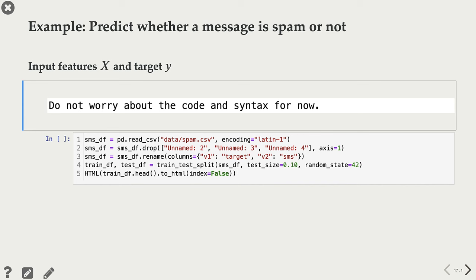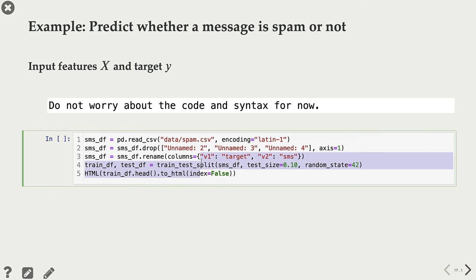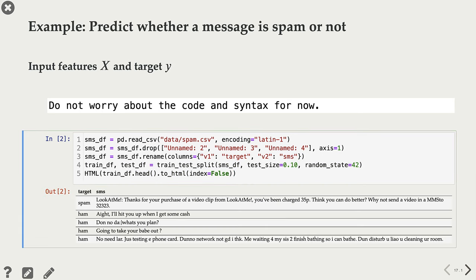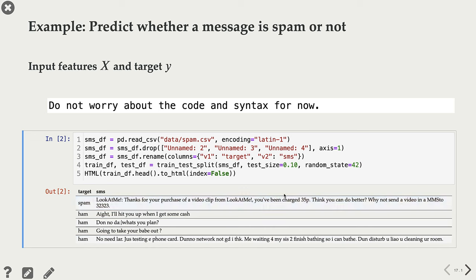Let's look at a concrete example of identifying spam. Do not worry about the code or syntax. Here I'm showing you the first few rows of a dataset containing spam and non-spam text messages. The SMS column contains our text messages and the target column has the corresponding targets. This first message looks like a spam message and is labeled as spam. The second message doesn't really look like spam and is labeled as ham — in this dataset they call non-spam 'ham'. So SMS is our X and the target column is our Y.